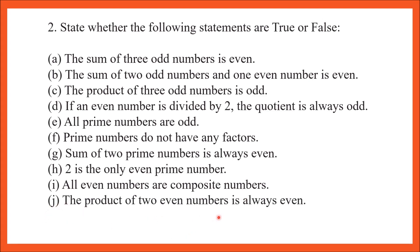Part J: the product of 2 even numbers is always an even number. Let's check with an example. I took even numbers 2 and 8. 8 multiplied by 2 is 16, which is even. We can verify this with many more examples. I hope you are enjoying playing with numbers!